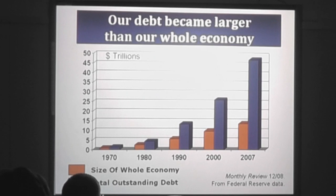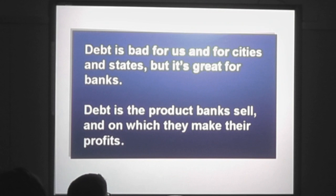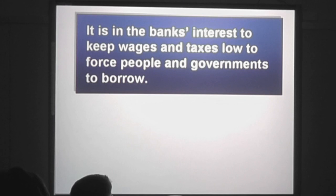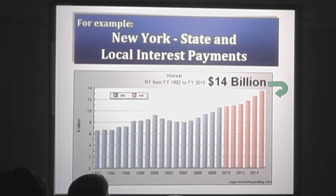By now, everybody was in debt. Debt became larger than the whole economy. The red bars are GDP; the blue bars are the total debt — government debt, credit card debt, student loans, mortgages, all that debt. Debt is bad for us — bad for cities and states — but it's great for banks. Debt is the product they sell. They call it credit, but it's debt. Once you have it, it's debt; when they have it, it's credit. That's what they make their profits on. It's in the banks' interest to keep wages and taxes low to force people and governments to borrow.